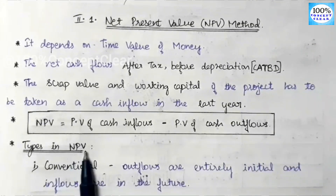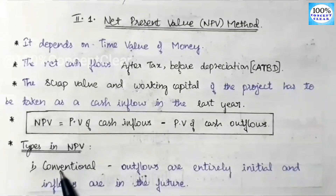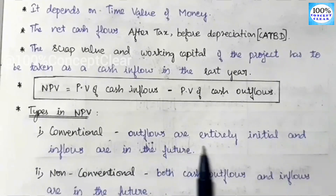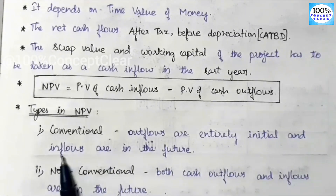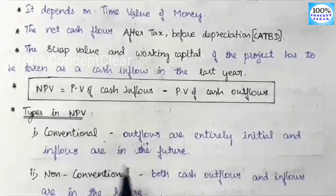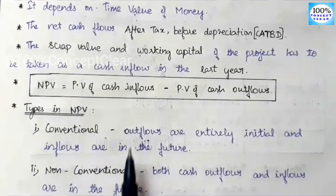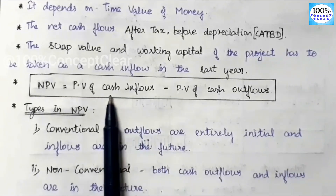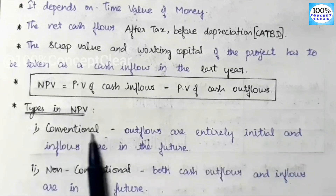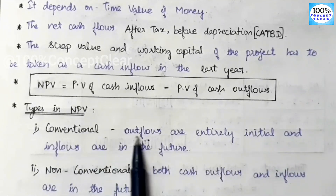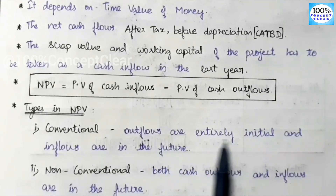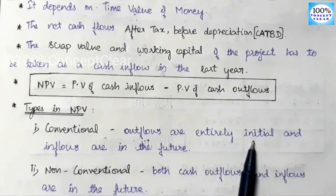There are types in net present value. The first type is conventional. In conventional NPV, the cash outflow is entirely initial — meaning the full investment is made at the beginning — and the cash inflows come in the future. In net present value there are two items: cash inflow and cash outflow. In the conventional type, the entire initial investment is made upfront.